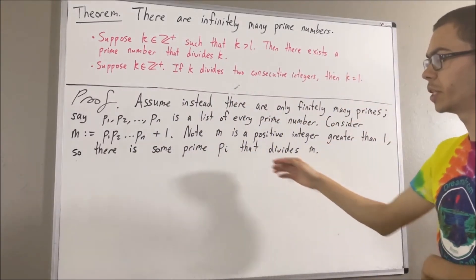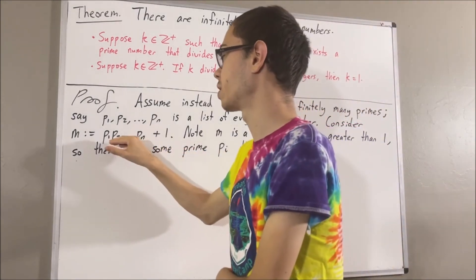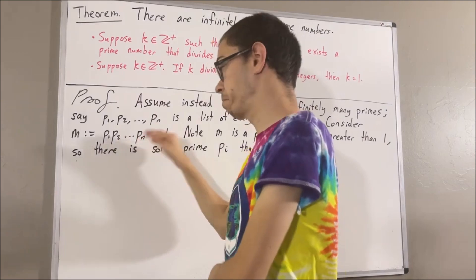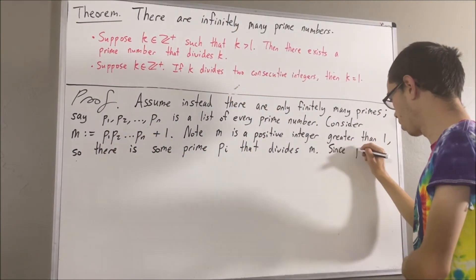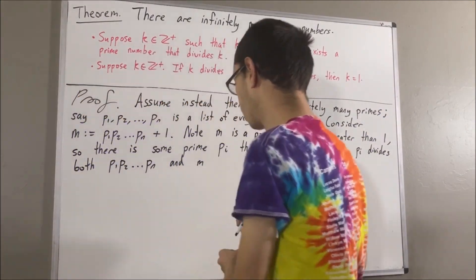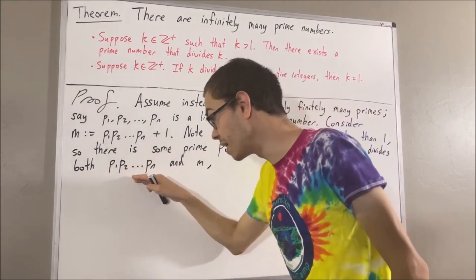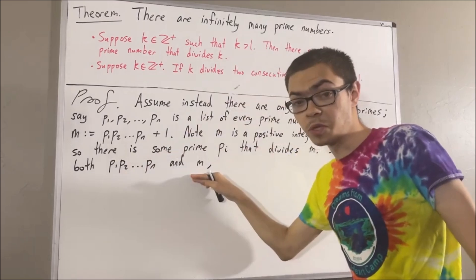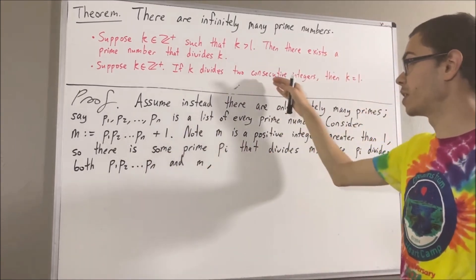But not only does pi divide n, but pi also divides the product of all prime numbers, because pi is somewhere in this product. And since pi divides both the product of all prime numbers and the product of all prime numbers plus 1, we have that pi divides two consecutive integers.